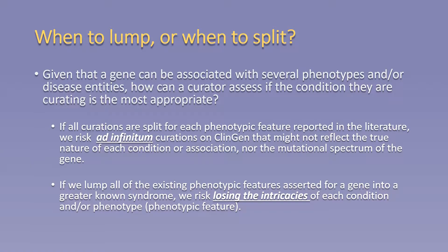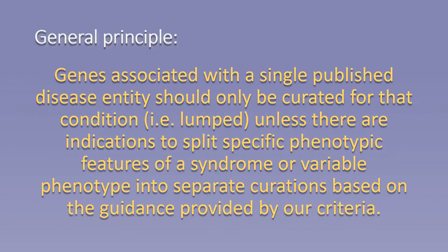Given that a gene can be associated with several phenotypes or disease entities, how can a curator assess if the condition they are curating is the most appropriate? If all curations are split for each phenotypic feature reported in the literature, we risk ad infinitum curations on ClinGen that might not reflect the true nature of each condition or association, nor the mutational spectrum of the gene. Conversely, if we lump all existing phenotypic features into a greater known syndrome, we risk losing the intricacies of each condition. The general principle is that genes associated with a single published disease entity should only be curated for that condition unless there are indications to split based on the guidance provided in our criteria.